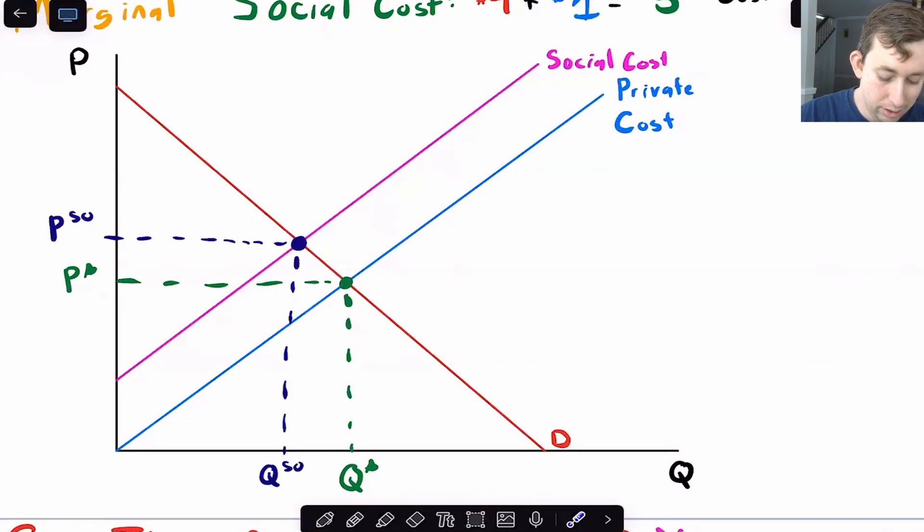So if I'm increasing the supply curve, I'm shifting the supply curve up. And so this pink line here is going to be the social cost, that's the total cost to society, not just the cost that the firm or Bill cares about.